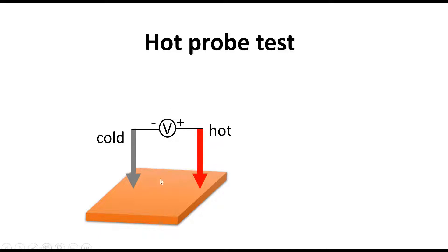One probe we keep at room temperature, and the other probe we make hot. You can make it hot by heating it up, say with a soldering iron.